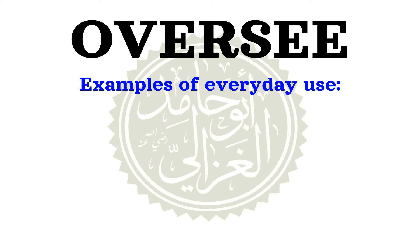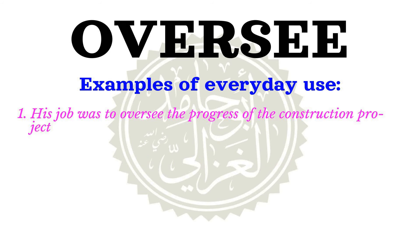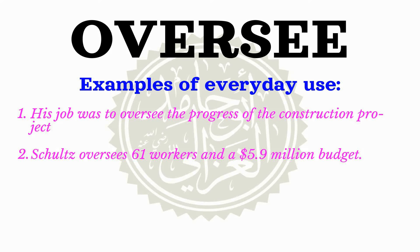Example sentences using the word oversee. His job was to oversee the progress of the construction project. Schultz oversees 61 workers and a $5.9 million budget.